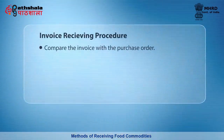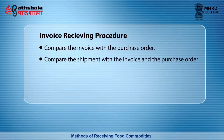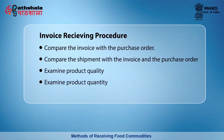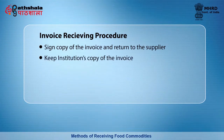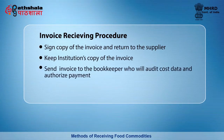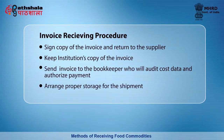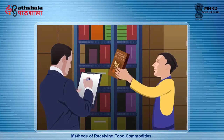The invoice receiving procedure includes the following steps: compare the invoice with the purchase order; compare the shipment with the invoice and the purchase order; examine product quality; examine product quantity; sign a copy of the invoice and return it to the supplier; keep the institution's copy of the invoice; send the invoice to the bookkeeper who will audit cost data and authorize payment; and arrange proper storage for the shipment.